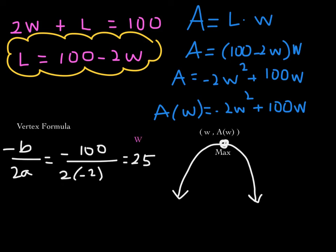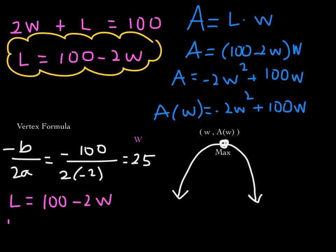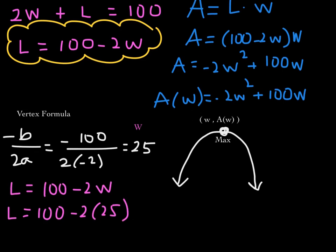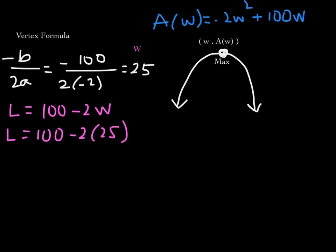Using negative b over 2a, we find that the width — the first coordinate of the vertex — is 25 feet. Before going further, let's find the length. The length is 100 minus 2w, so the length is 100 minus 2 times 25, which equals 100 minus 50. The length is 50 feet. So the width is 25 feet and the length is 50 feet.